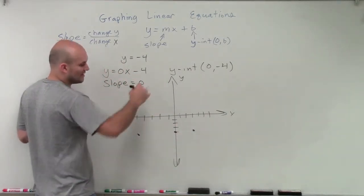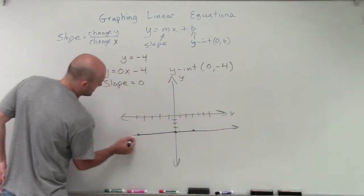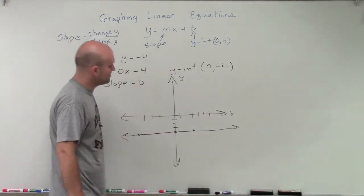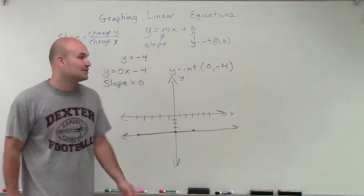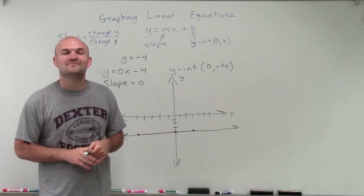Because remember, when your slope is 0, that creates a horizontal line. So I'll just create a horizontal line going through my y-intercept of 0, comma, negative 4. So ladies and gentlemen, that's how you graph your horizontal line in slope-intercept form. Thanks.